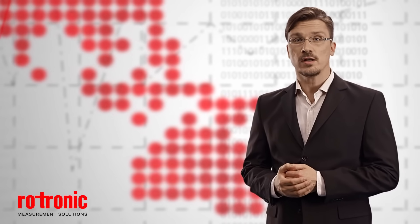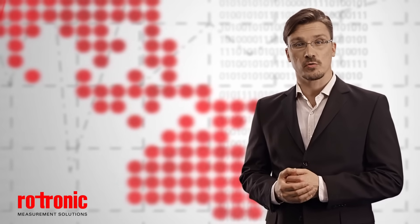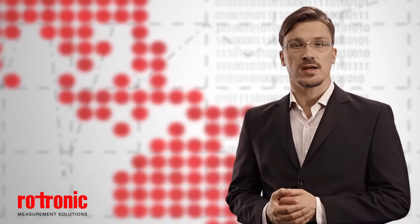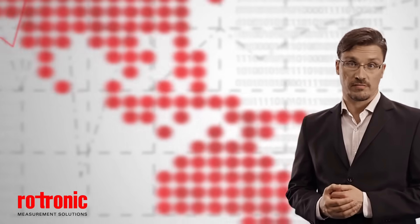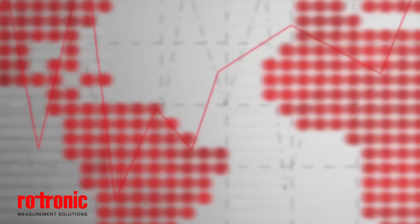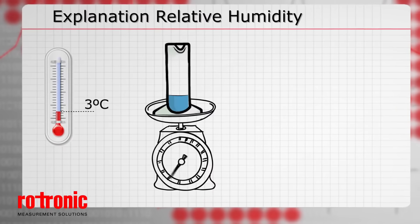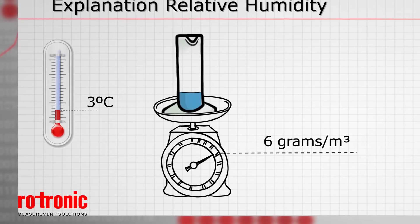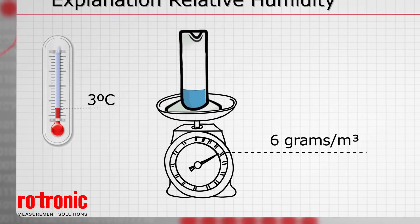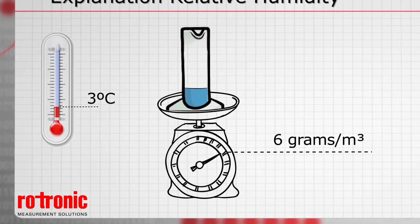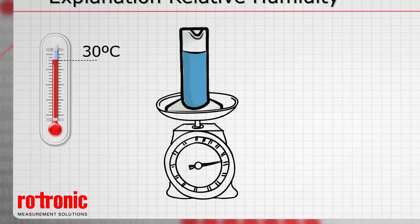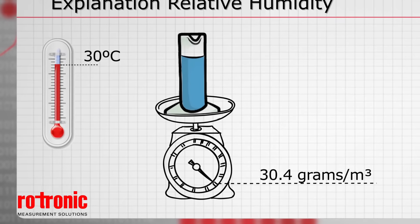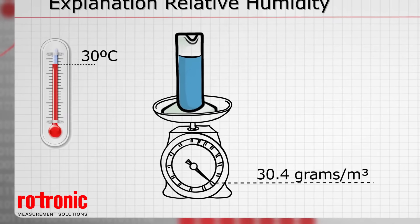Air can only absorb a certain amount of water vapor. This amount depends on the temperature of the air. At an air temperature of 3 degrees Celsius, this amount is a maximum of 6 grams of water vapor per cubic meter. The amount at 30 degrees Celsius is much higher, at 30.4 grams.